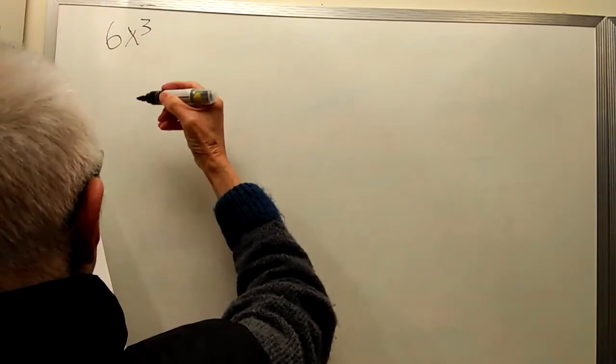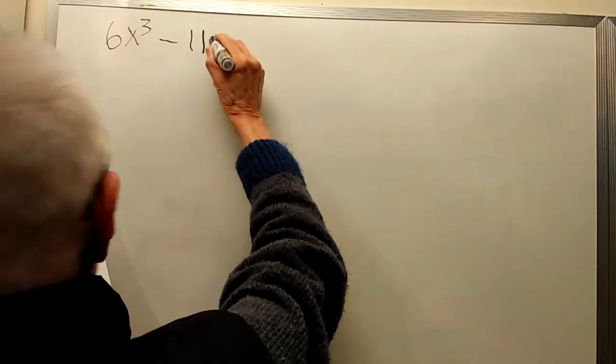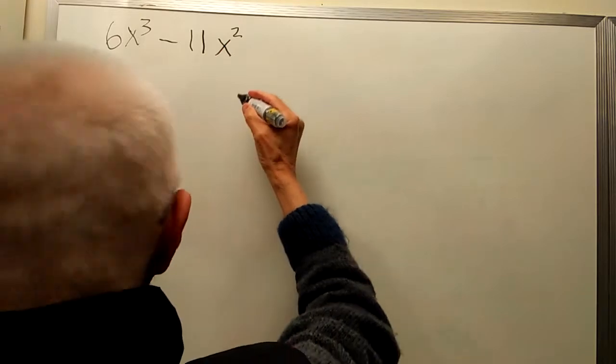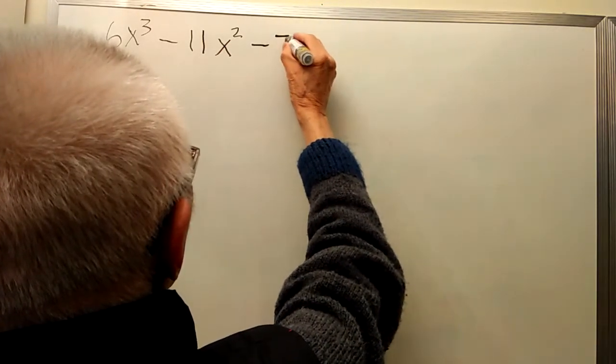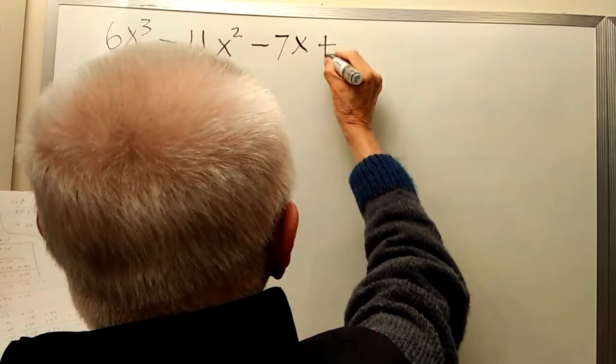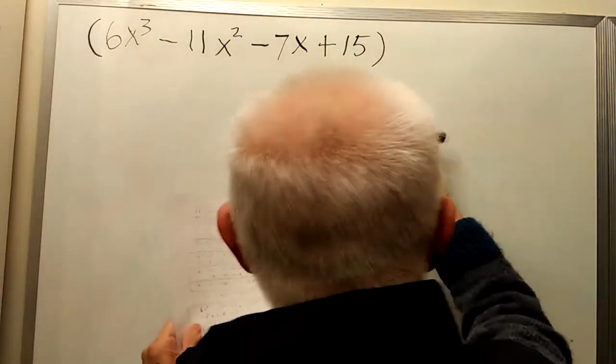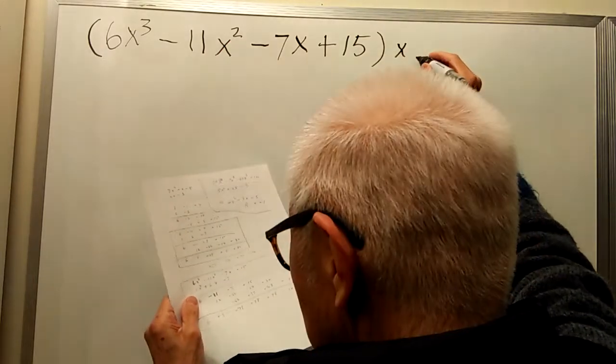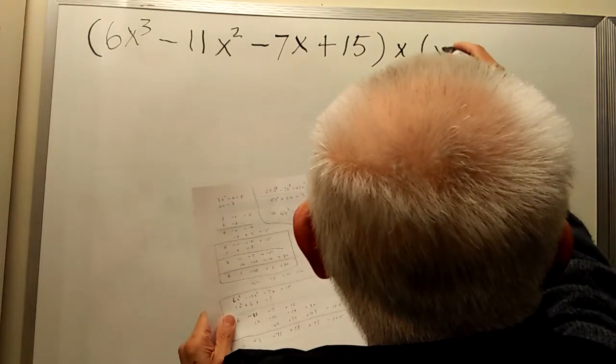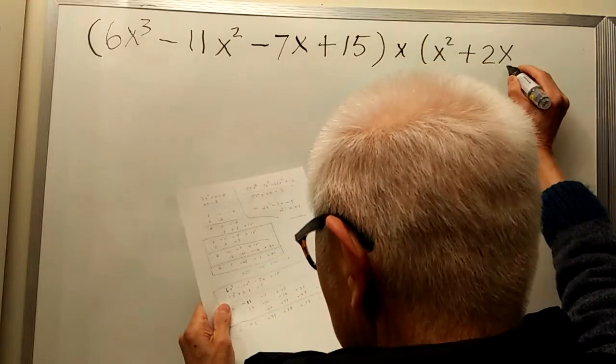6x³ minus 11x² minus 7x plus 15, this times x² plus 2x minus 7.